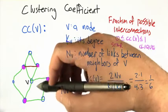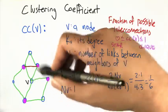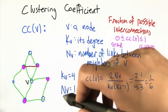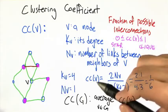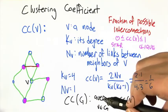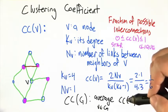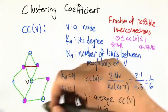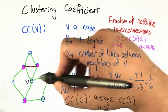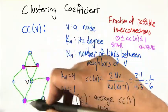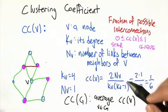And we're going to say that the clustering coefficient for a graph is just the average of the clustering coefficients of the nodes in the graph. So if we wanted to compute the clustering coefficient of this graph, we'd actually have to go through node to node, compute the clustering coefficient for each one, and then average.